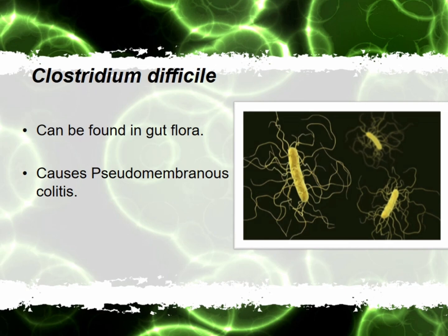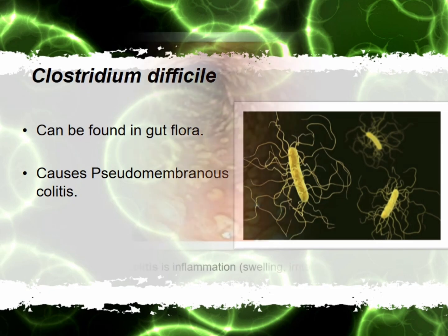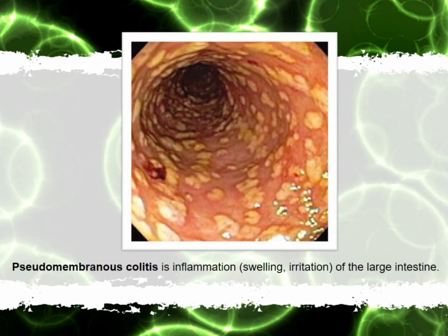The next one is Clostridium difficile. This is a rod-shaped bacteria with some hair-like structures on it, as we can see in the picture. They are found in the intestine due to the entrance of contaminated food. The infection looks like pseudomembranous colitis — an extremely inflamed condition on the internal wall of the large intestine. Sometimes even pus and bleeding inside the large intestine can occur due to this.